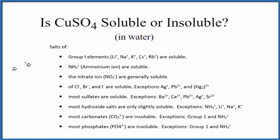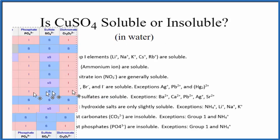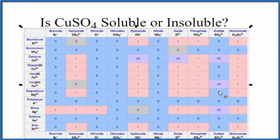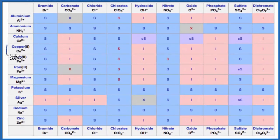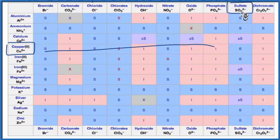We could also look at what's called a solubility chart. So here's our solubility chart. On the left, we have the positive ions. We're looking for copper. Here's copper 2, Cu2+. And then across the top, we're looking for the sulfate, that SO4. Here's our sulfate, SO4 2-. So we're going to go over and down. And right here, that S means that copper 2 sulfate is going to be soluble in water.